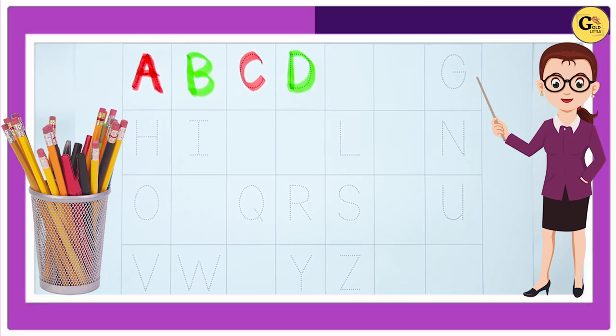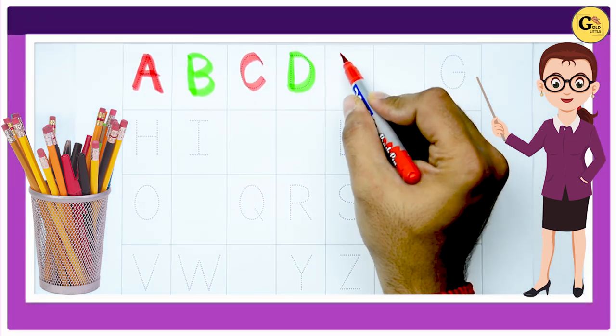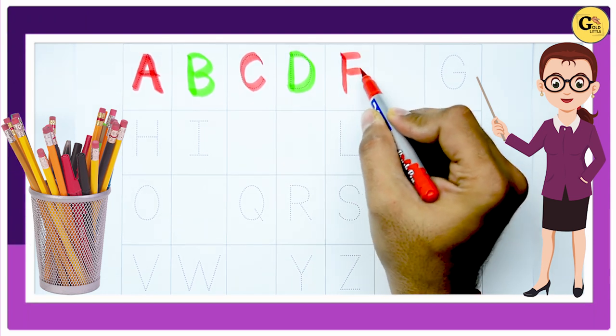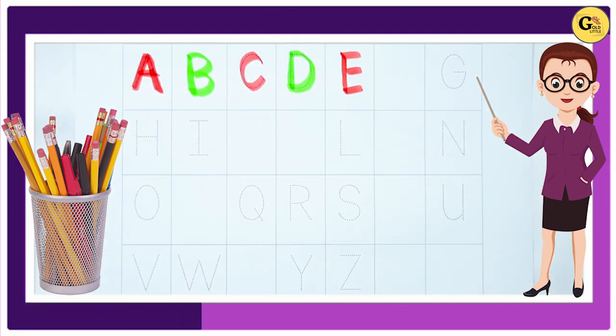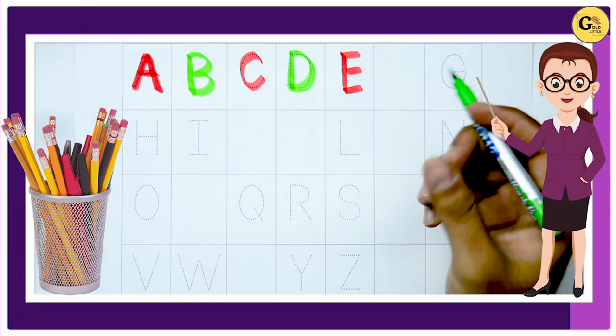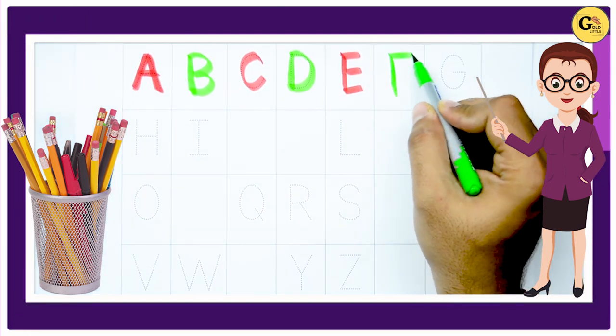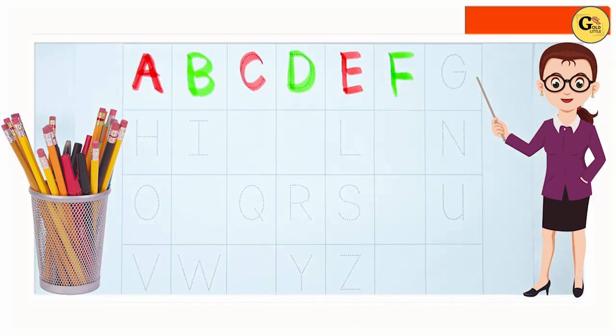Tell me what is after D. A B C D E. It's E. E for elephant. After E it's F. F for feet.